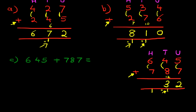And now the hundreds. We've got six plus seven. And the one over here. Six plus seven is thirteen. Plus the one is fourteen. And as you've probably guessed, we need another column.